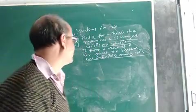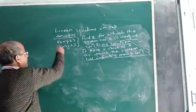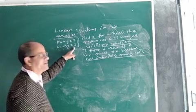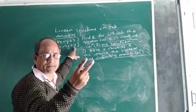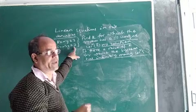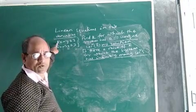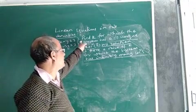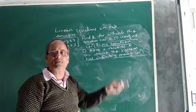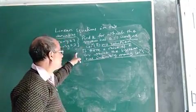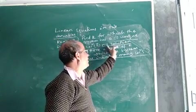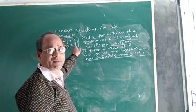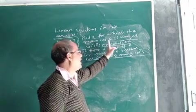The question is: suppose you are given a pair of linear equations, Kx minus y equal to 2, and 6x minus 2y equal to 3. Here K is some constant and is the coefficient of x. We do not know the value of K. The question asks us to find the value of K such that this system will have a unique solution or no solution — two parts.